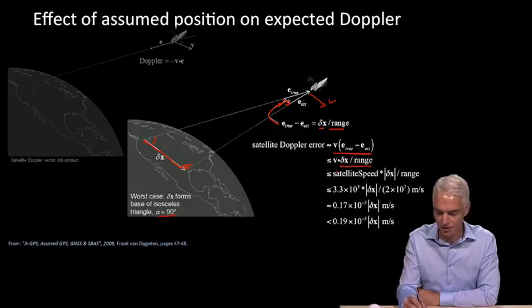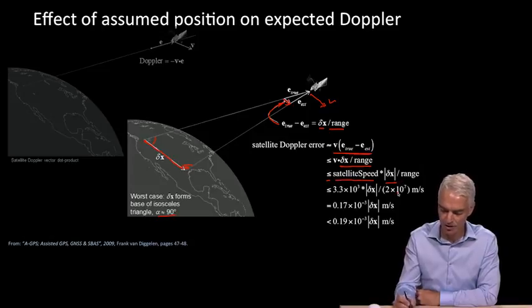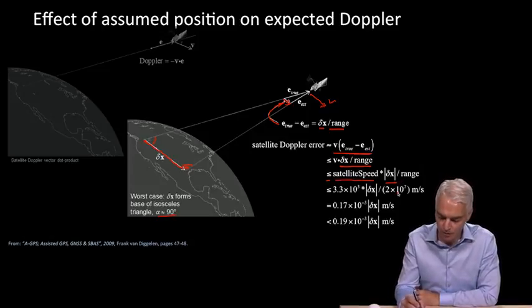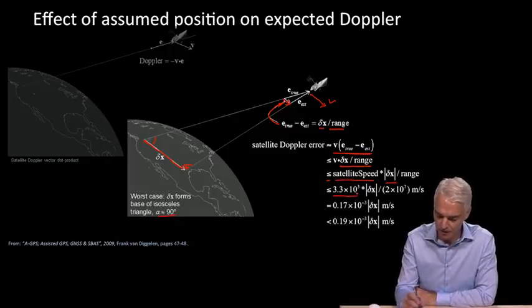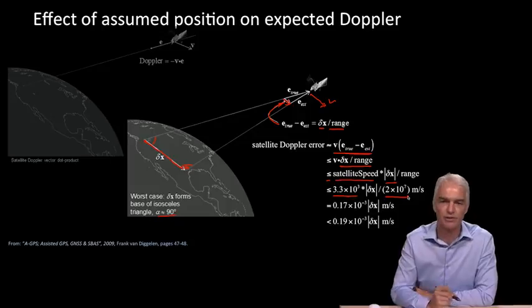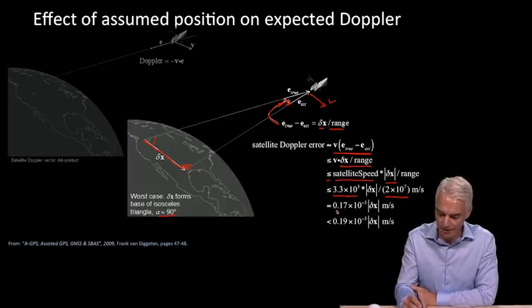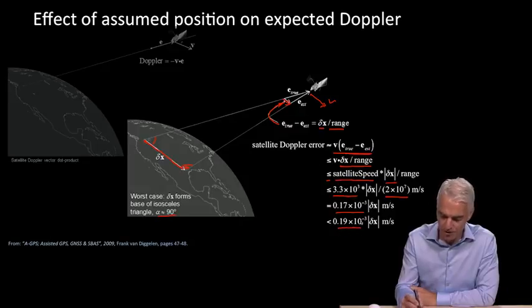Now we just have to put in the values. v dot delta x is the magnitude of v, which is satellite speed, times the magnitude of delta x, times cosine of the angle between them. Cosine is always less than one, so we have an upper bound here, then divide by the range. You'll remember from a previous video that the satellite speed in Earth Center Earth Fix coordinates is bounded by 3.3 kilometers per second. The range of the satellite is about 20,000 kilometers. If we multiply this all out, we get 0.17 times 10 to the minus 3. We choose to put an upper bound on that of 0.19 times 10 to the minus 3.